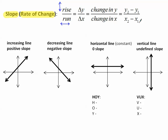Here is a review of what different lines can look like. An increasing line going up has a positive slope. A decreasing line going down has a negative slope. Remember, we always read left to right — left to right, this goes up; left to right, this goes down. A horizontal line, which is constant, has a slope of zero. And a vertical line has a slope that is undefined — this is vertical, up and down.